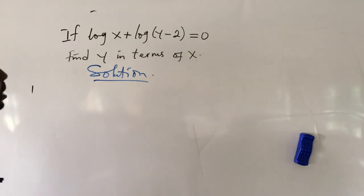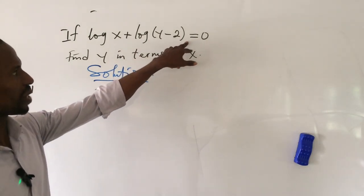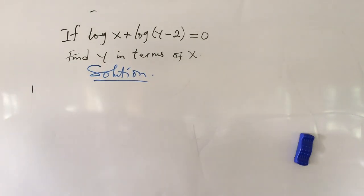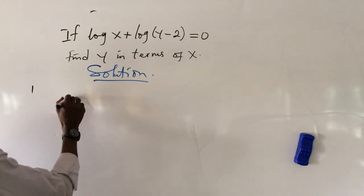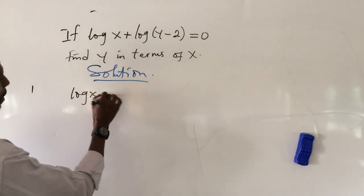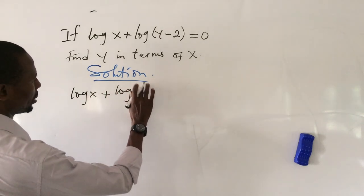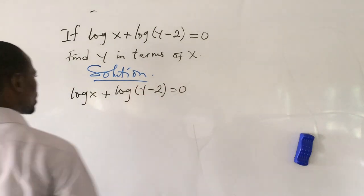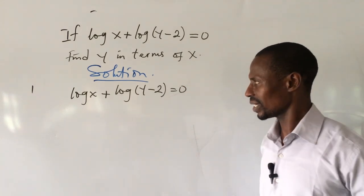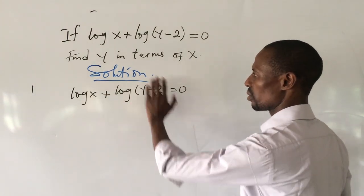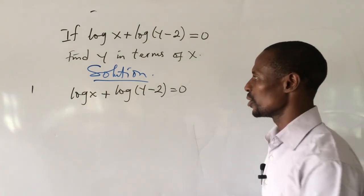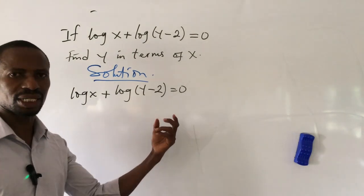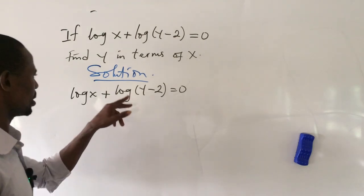The next question is: if log x plus log (y minus 2) equals 0, find y in terms of x. We pull down this question. Note that the base is not specified, so whenever you have a question of this kind, the base is taken as 10 — the common logarithm. So both logs here are in base 10.